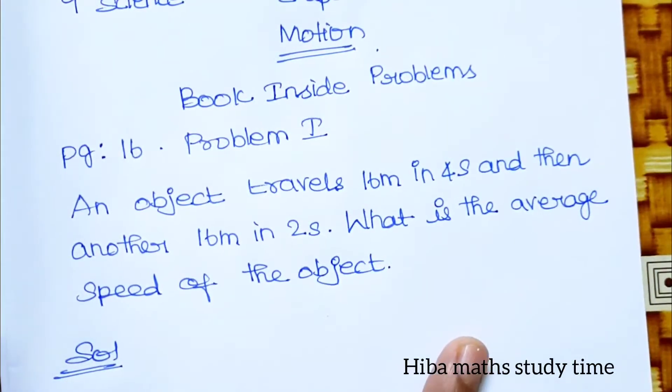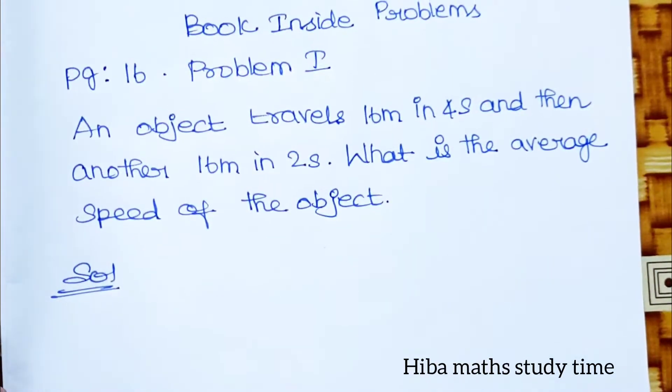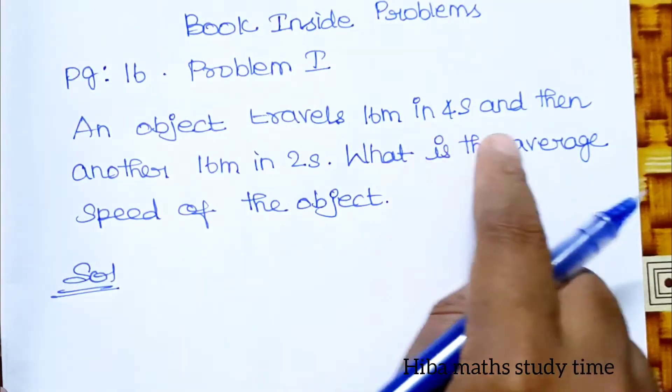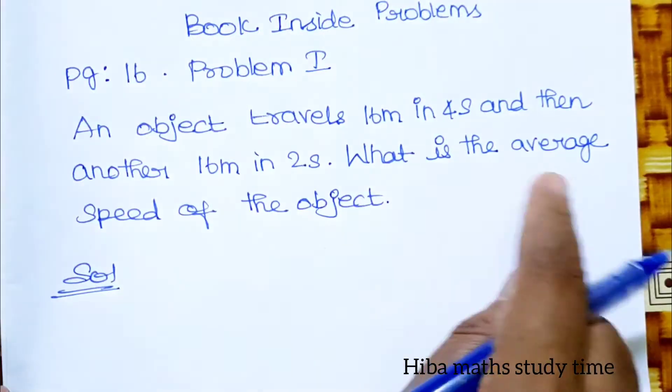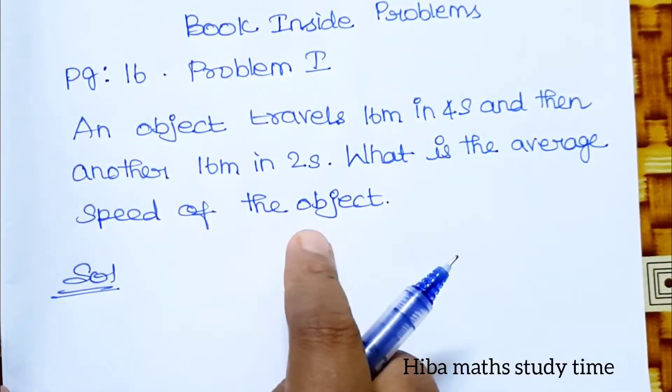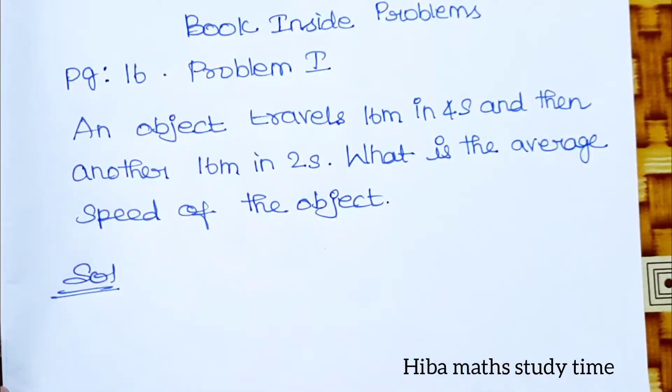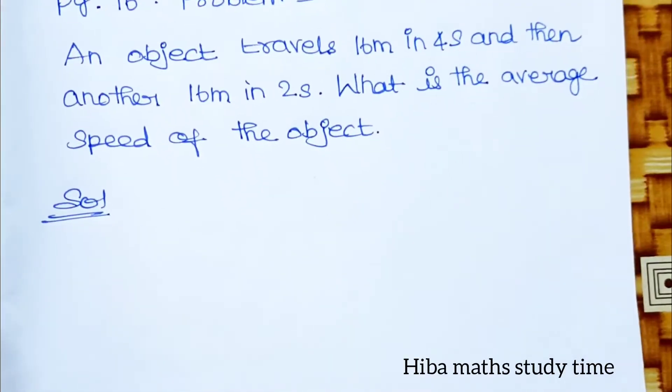First problem: An object travels 16 meter in 4 seconds and then another 16 meter in 2 seconds. What is the average speed of the object? So for average speed, we have to use the formula.